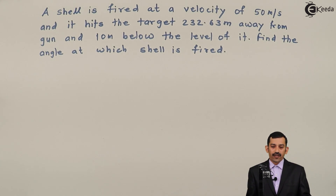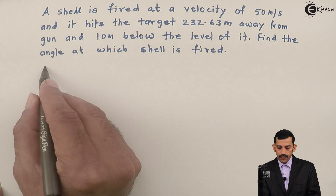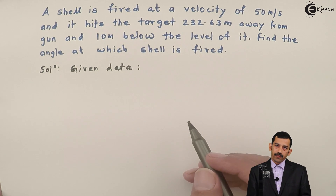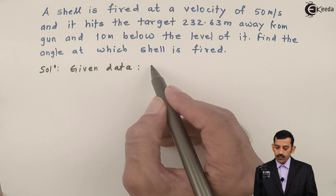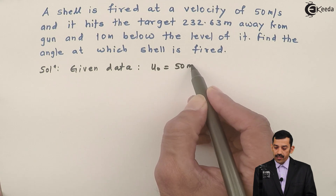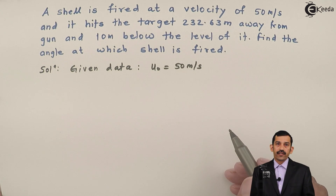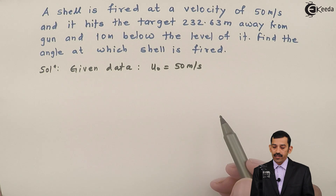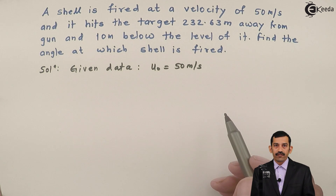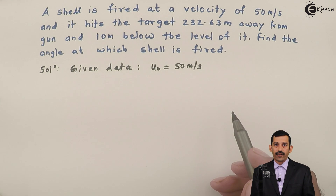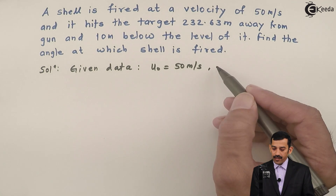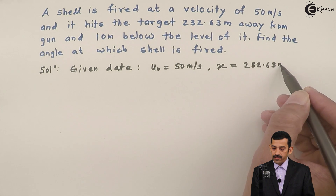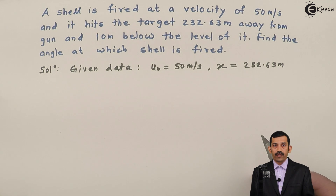Let me write down the given data. A shell is fired at a velocity of 50 meters per second, so U₀ equals 50 meters per second. It hits the target 232.63 meters away from the gun — that means the horizontal distance traveled by the projectile, X, equals 232.63 meters.